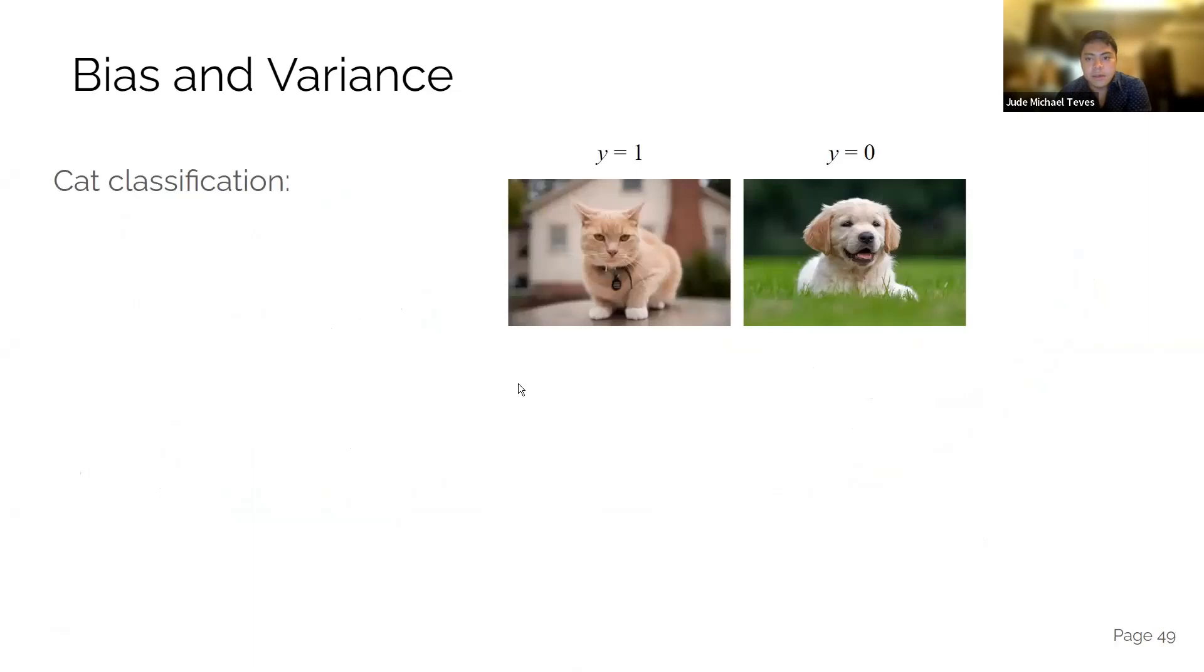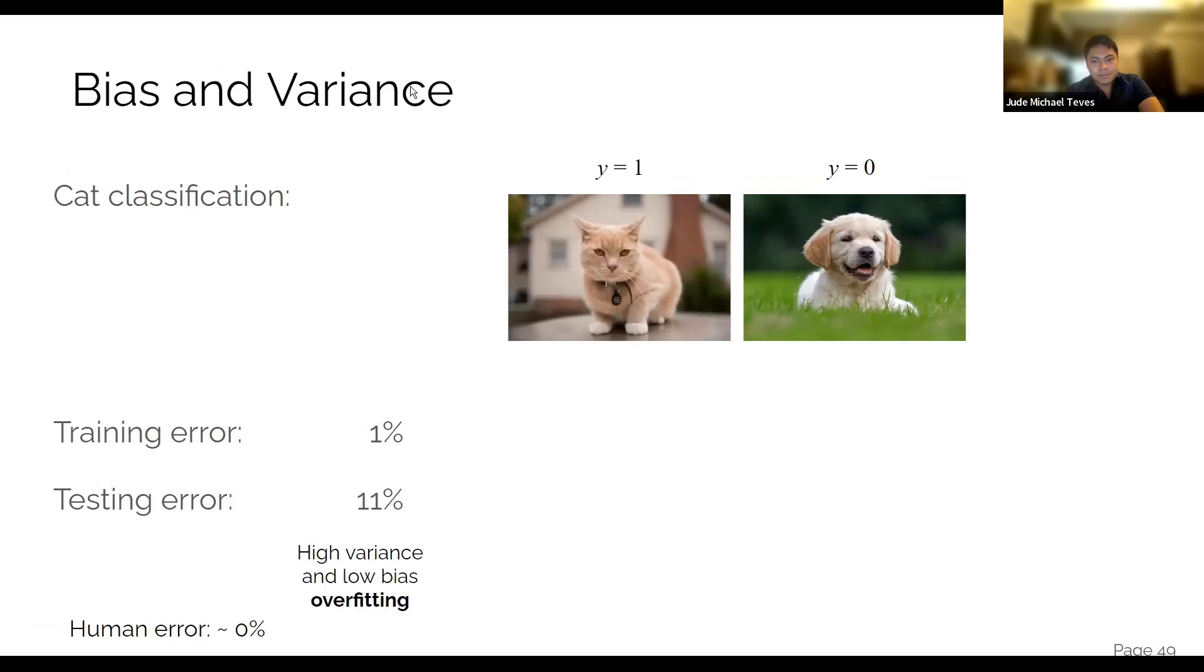More examples of bias and variance in the context of cat classification. So training error, let's just say, for example, the human error is zero. That's our benchmark, the human error. Because in most cases, a human can identify if the picture is of a cat or a dog. So if you have a model and you trained it and you got the following scores, the training error is 1%, the testing error is 11%, you say that it's high variance and low bias. Why is that? Bias is computed by simply subtracting the training error and the human error. Human error is the ideal one, best case scenario. But our model is, well, it's good enough. It's near the human error. So it's low bias. But high variance because there's a big gap between the training and test error.